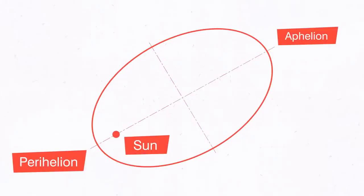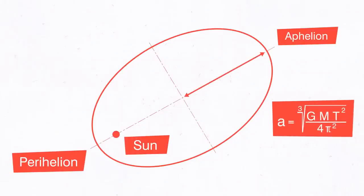Nibiru supposedly has an orbital period of 3600 years. Knowing this, I use Kepler's third law to compute Nibiru's semi-major axis. The gravitational constant G equals 6.673 times 10 to the power of minus 11 cubic meters per kilogram second squared.